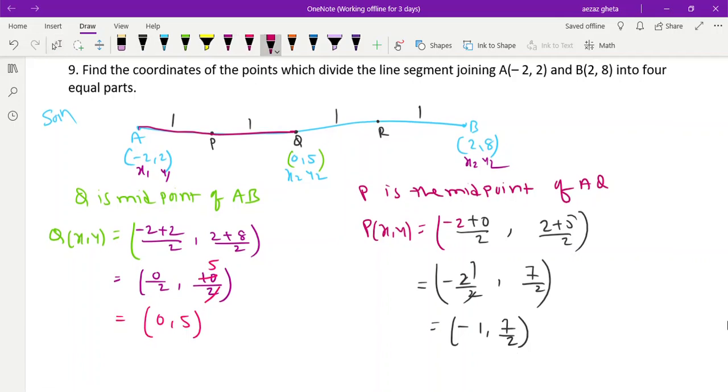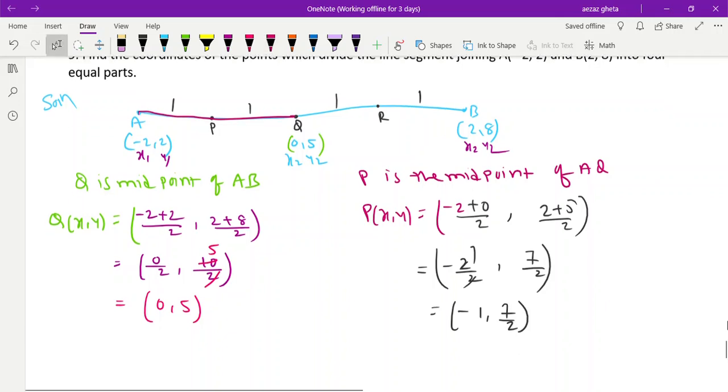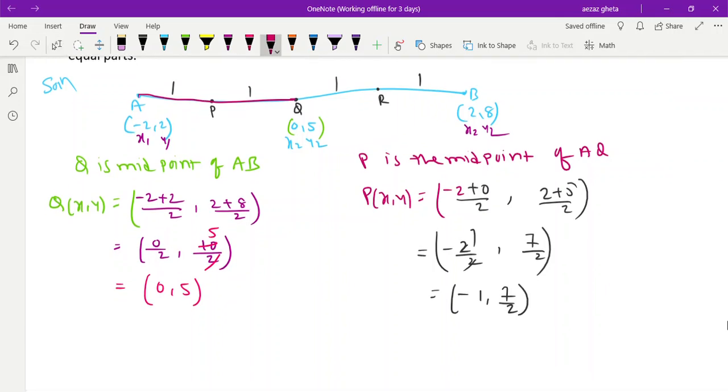Hope you understood. Can you find out R by yourself? Can you find out R by yourself? R is midpoint of what? R is the midpoint of QB. So here Q, your Q is x₁, y₁.